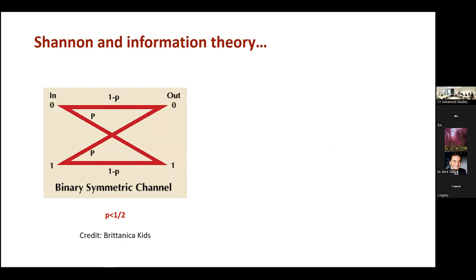It looks like a simple graph with two nodes on the left and two nodes on the right, but it's not really a graph — it's what we call a channel. The channel has a special name: the binary symmetric channel. It explains what happens to a single bit, a zero or a one, when you pass it through a channel, in a probabilistic way. If you pass a zero, you may get a zero at the output — the correct information — with probability one minus p, where p is assumed to be less than one half.